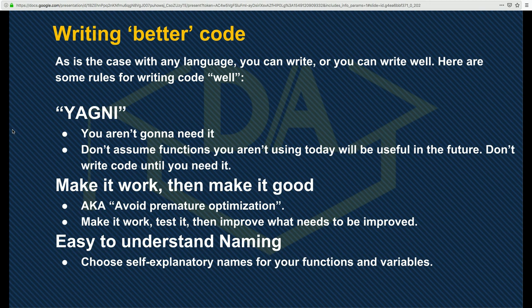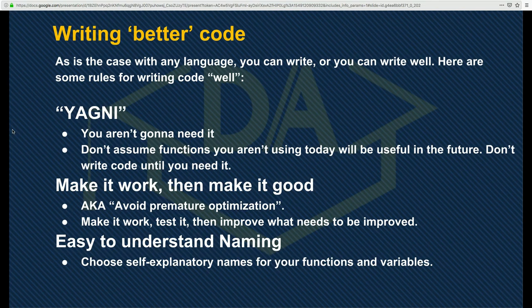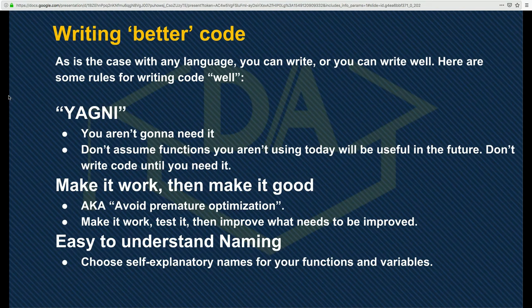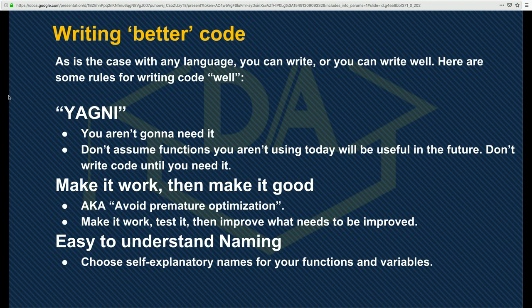Another principle is to make it work and then make it good. With that code where we were copying and pasting the stand-up code — that's fine while you're writing it. Get the code to work, save that version, and then go back and do the deduplication. Especially if you're early on in your programming career, don't stress so much about perfect architecture. Try to validate that you can do it and then move on to structuring it properly.